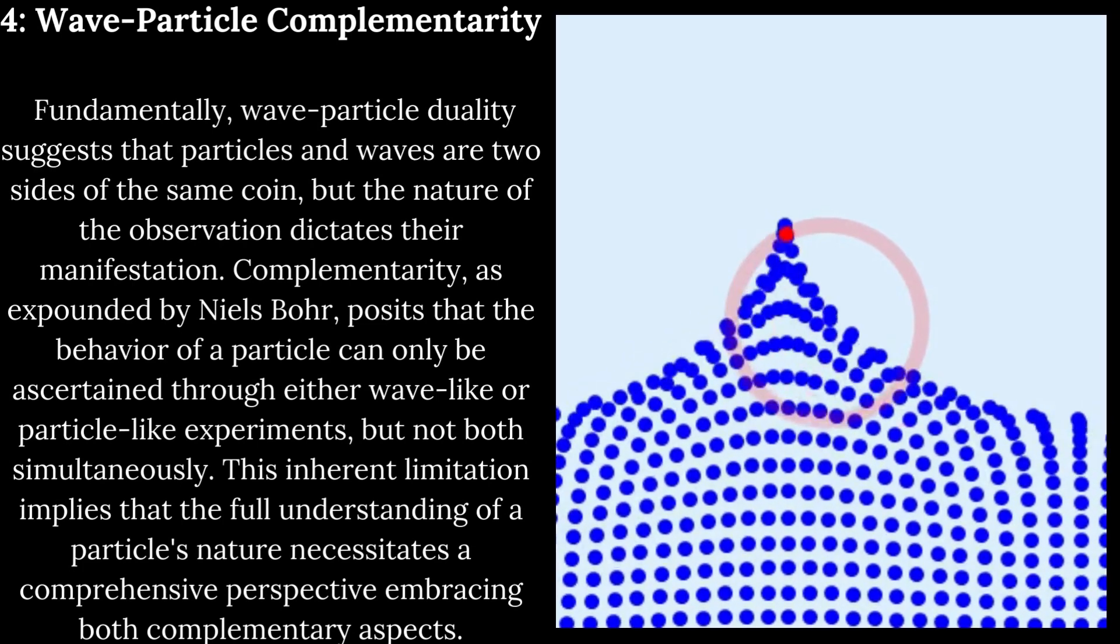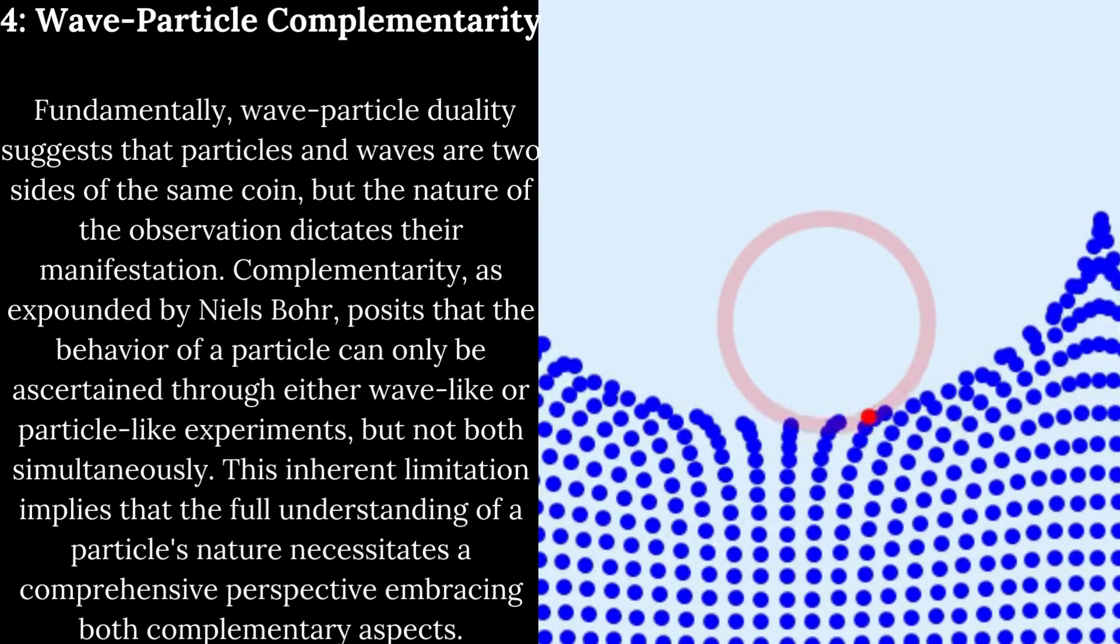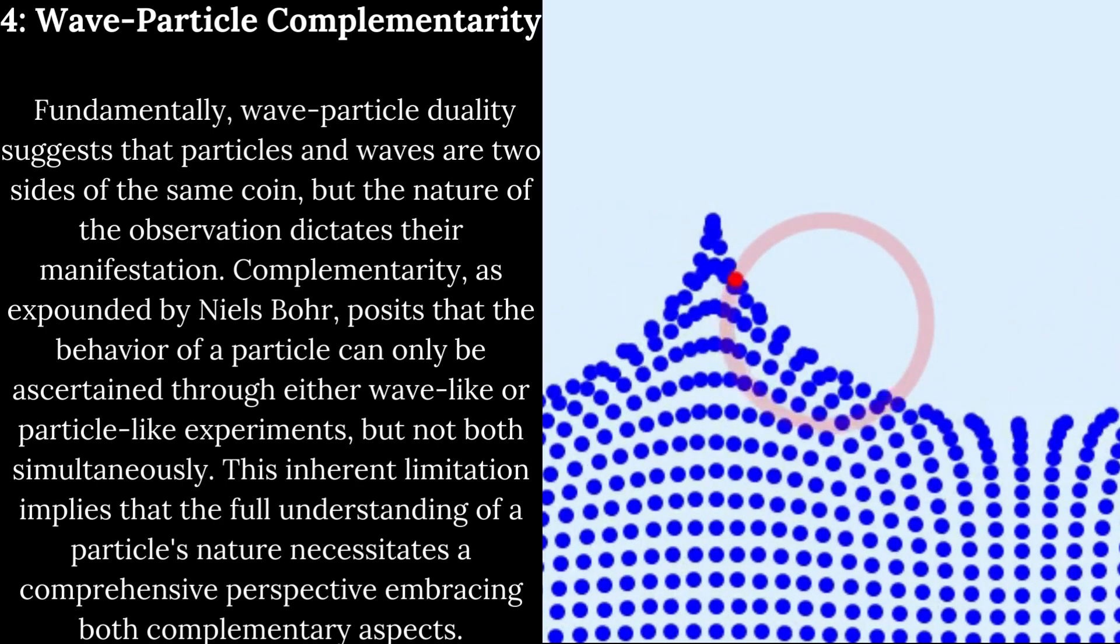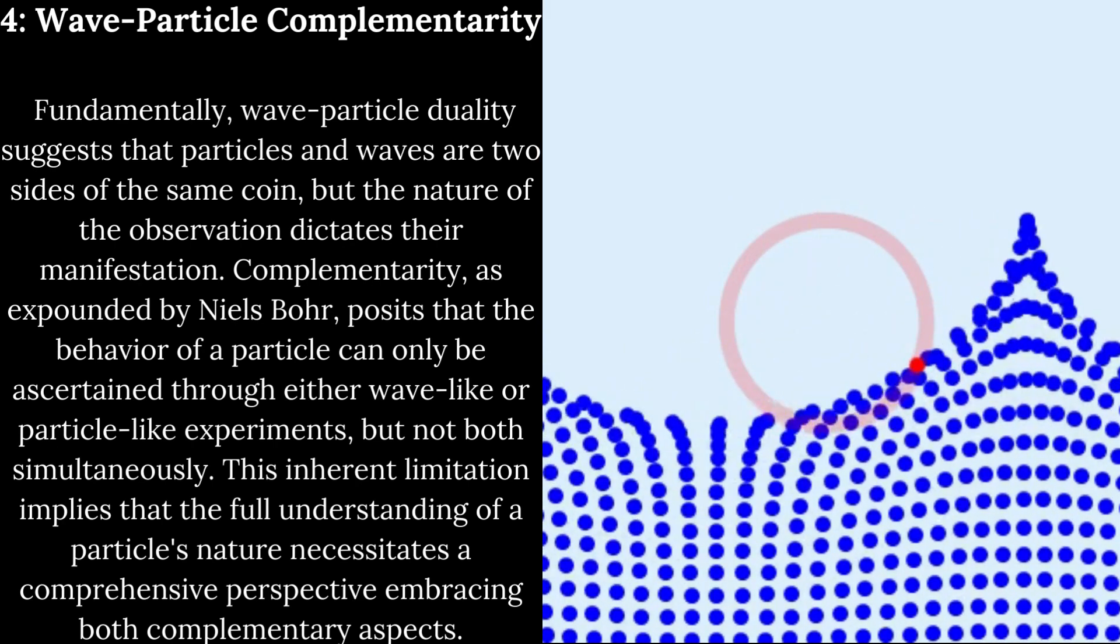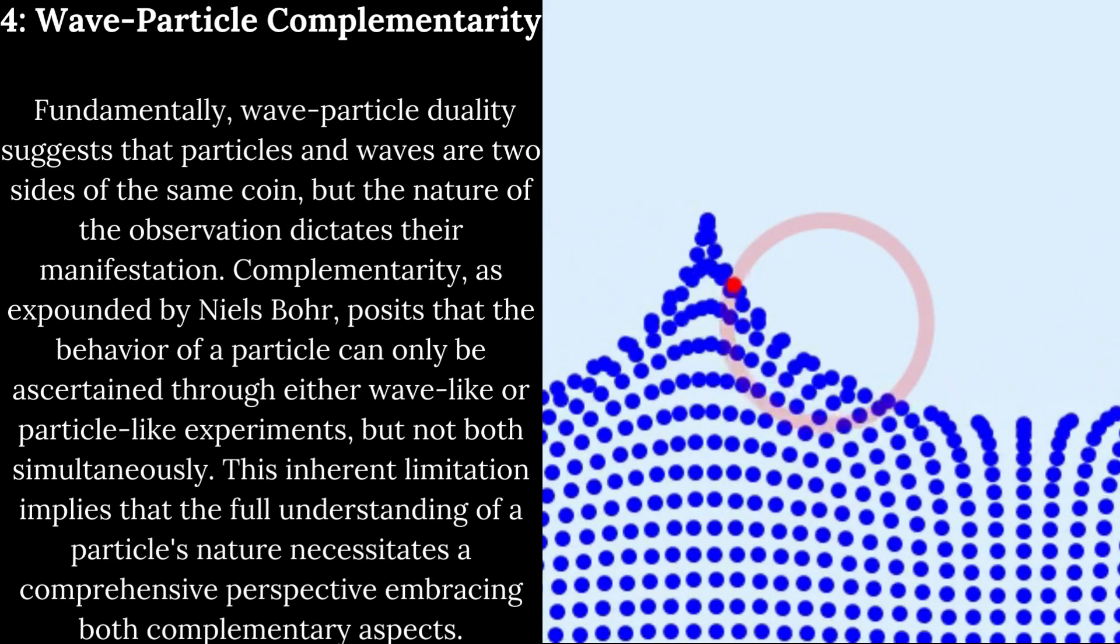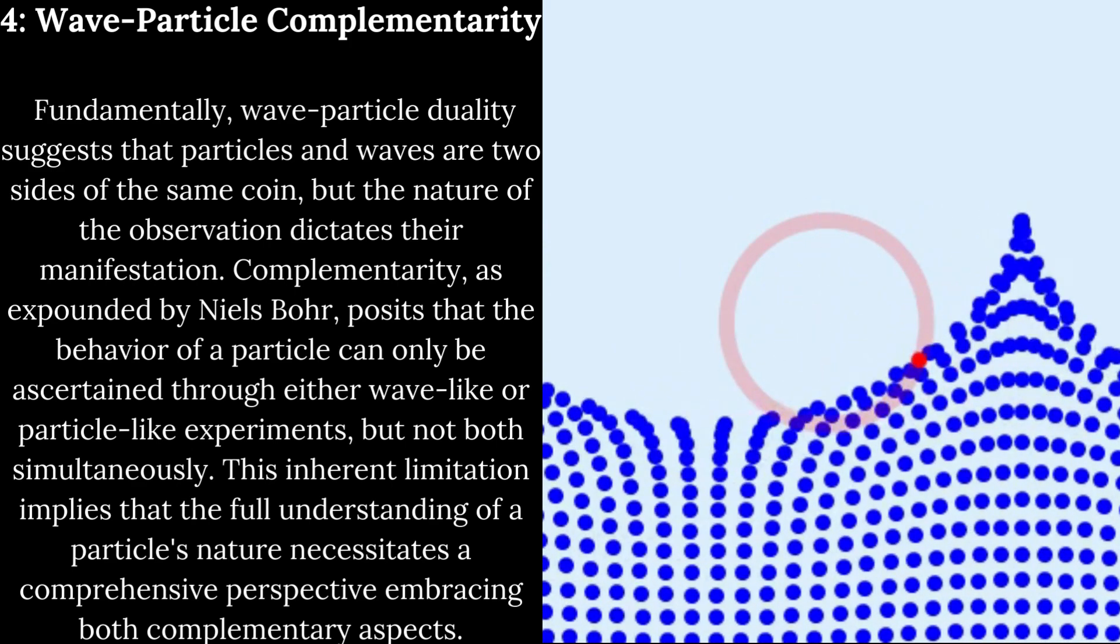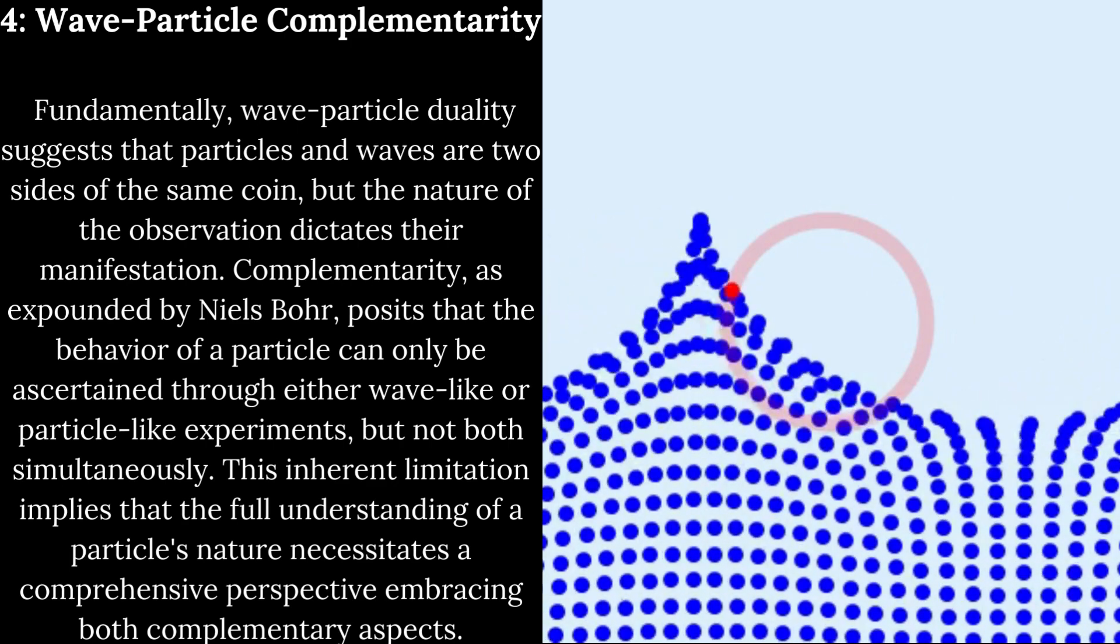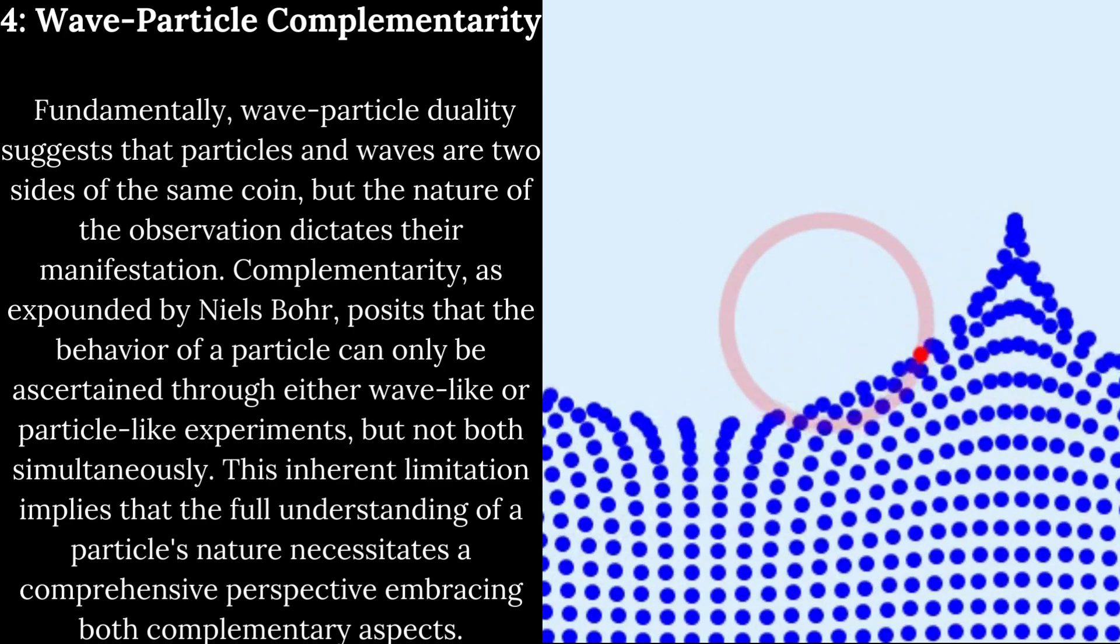Wave-particle complementarity. Fundamentally, wave-particle duality suggests that particles and waves are two sides of the same coin, but the nature of the observation dictates their manifestation. Complementarity, as expounded by Niels Bohr, posits that the behavior of a particle can only be ascertained through either wave-like or particle-like experiments, but not both simultaneously. This inherent limitation implies that the full understanding of a particle's nature necessitates a comprehensive perspective embracing both complementary aspects.